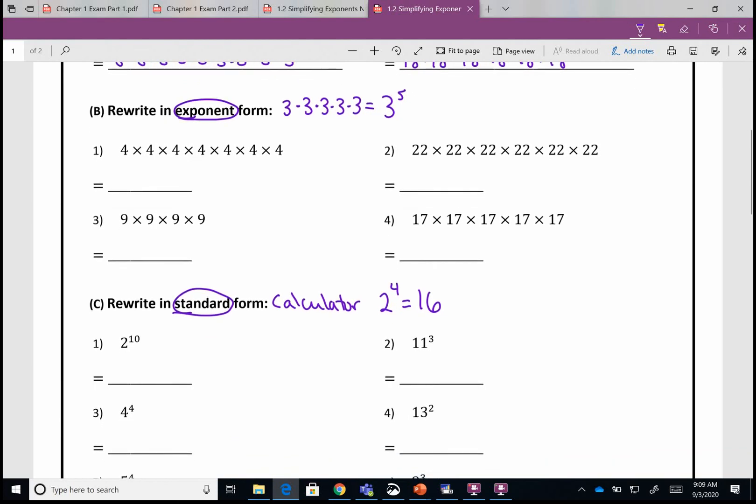In question one, my base is going to be four because that's the number I'm multiplying, and then it's one, two, three, four, five, six, seven times, so the exponent will be seven. In number two, the number I'm multiplying together is 22 and I do that one, two, three, four, five, six times, so my exponent is a six.